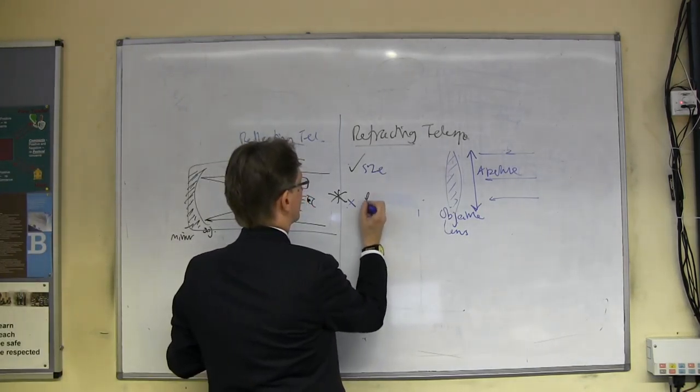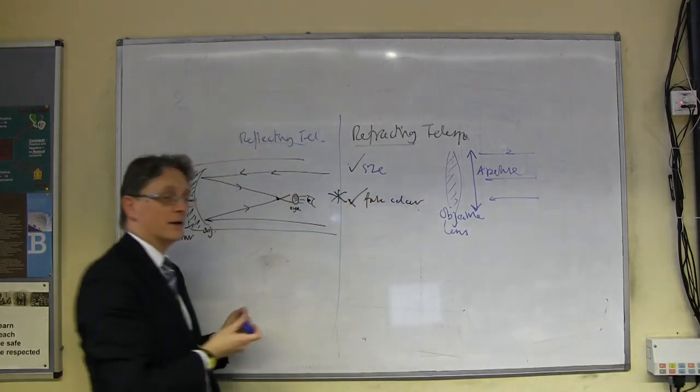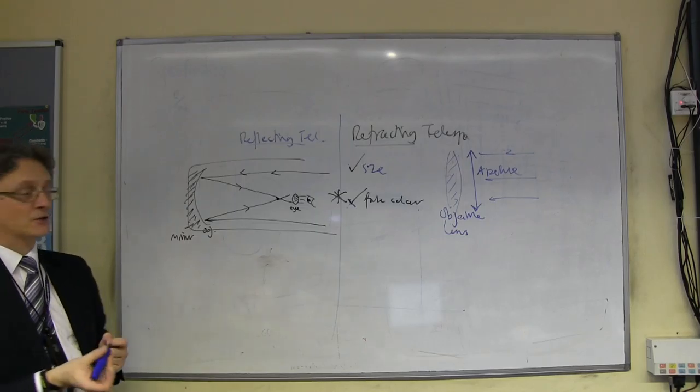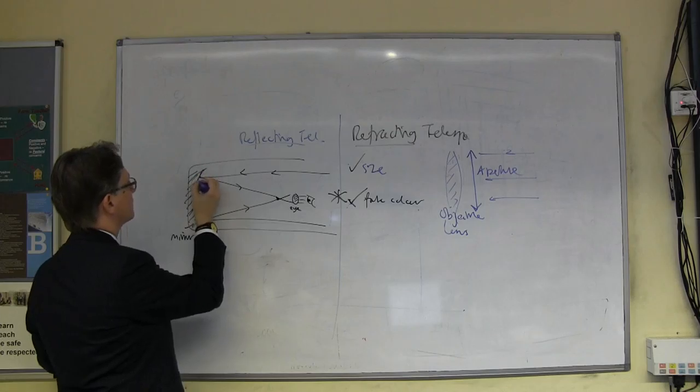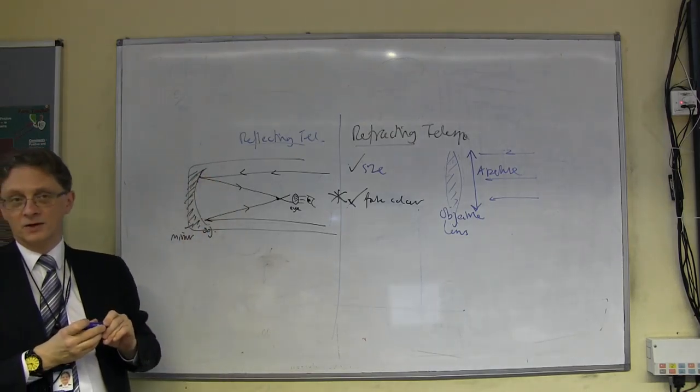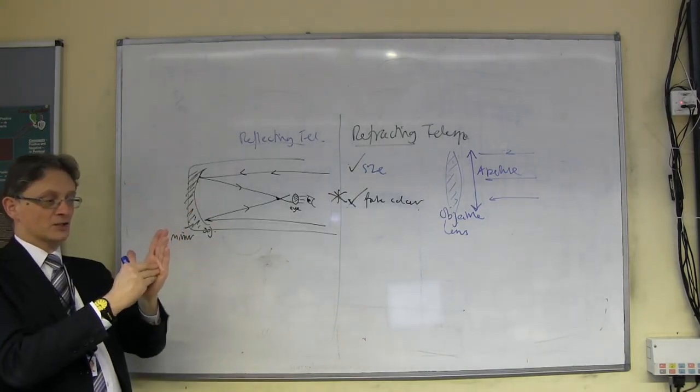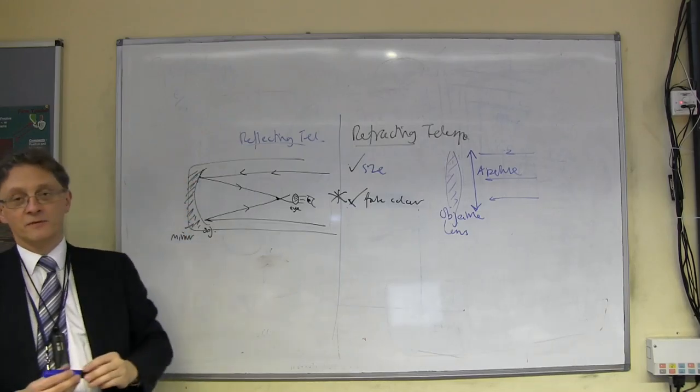And also, false colour. Because there is no refraction, what actually happens is the light just reflects off the shiny piece of metal. A mirror is normally a piece of glass with some shiny metal on, and when the light hits the shiny metal, boing, off it goes. In theory, that's just a reflection.